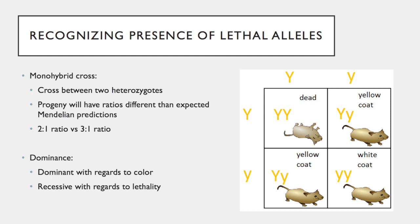To determine if an allele causes lethality, a monohybrid cross can be performed, which is a cross between two heterozygotes for a single gene. In the picture on the right, we have two heterozygote mice which are yellow in color. We know the yellow fur color is a dominant phenotype annotated by the uppercase Y, and the lowercase y is annotating for a recessive white fur color.